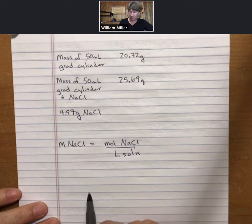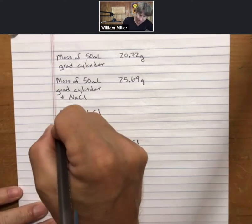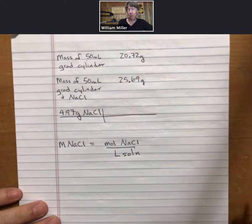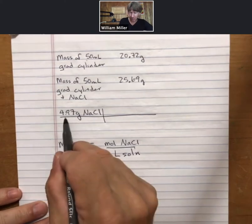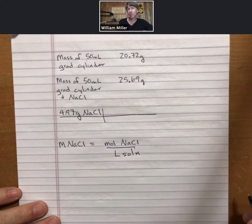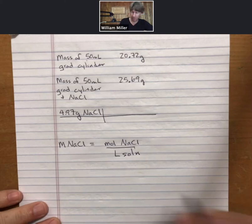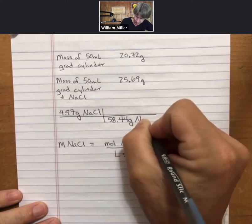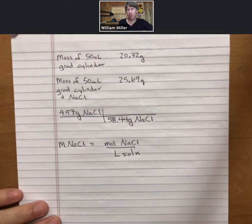I know that I've got my grams of sodium chloride which I can turn into moles using the molar mass. When I do this, I need to use a molar mass that has at least one more significant figure than my 4.97 grams. If I add up the molar masses for sodium chloride from the periodic table I get 58.44 grams of sodium chloride per one mole sodium chloride.